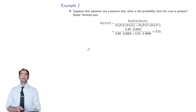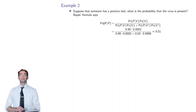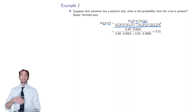Suppose someone has a positive test — that's the event of interest. What's the probability they actually have the virus? Bayes' formula gives us the probability of the virus given a positive test: that's the probability of P given V times the probability of V, divided by a sum over the partition. The partition in this case is virus or no virus.